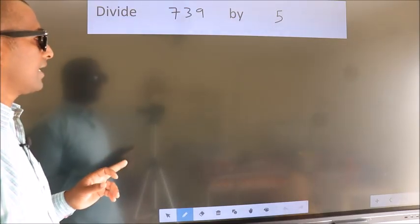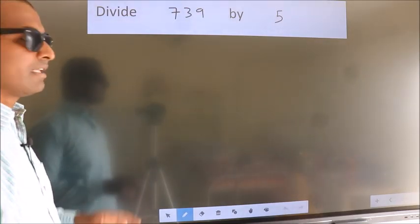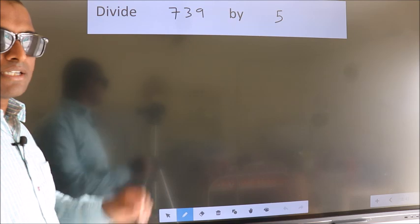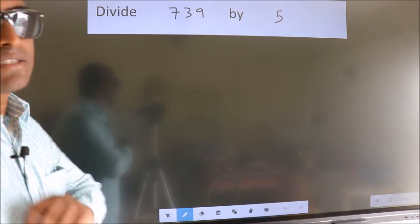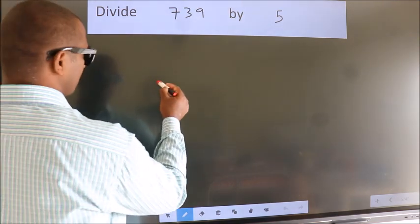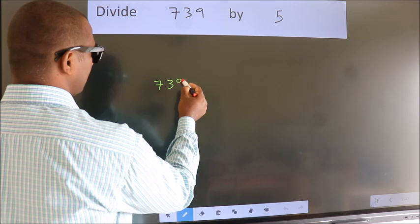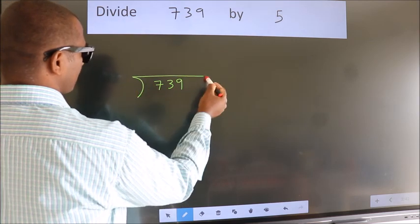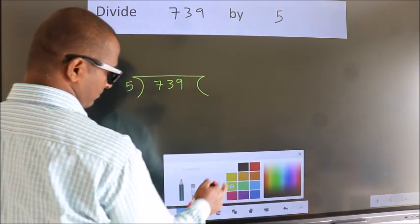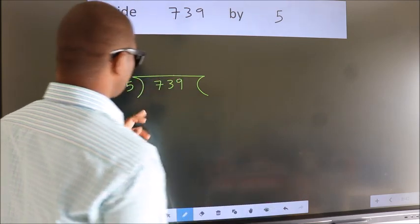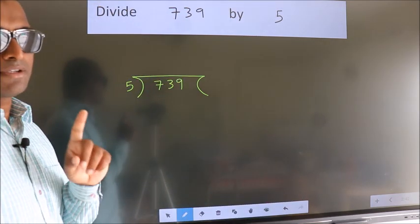Divide 739 by 5. To do this division, we should frame it in this way. 739 here, 5 here. This is your step 1.